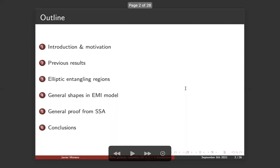The structure of the talk is going to be the following. First, an introduction and motivation to present the main conjecture, namely that disks like regions maximize entanglement entropy as the title suggests. Then we review some results from the literature that support this claim. Then we study what happens for elliptic entangling regions in some theories and more general shapes in the extended mutual information model. And lastly, we study a general proof coming from strong sub-additivity property of entanglement entropy.